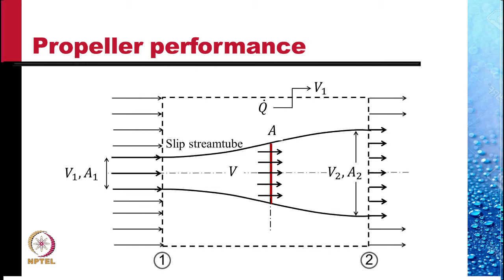We assume that outside this the disturbance in the flow is very little. Whatever is the fluid that enters the stream tube at the left end leaves at the right end.